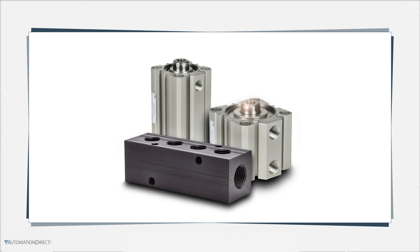Reversing the directional control valve will provide compressed air to the retract port, allowing exhaust to escape the extend port, and the cylinder will return to its home position.